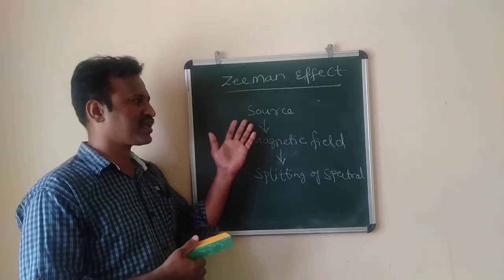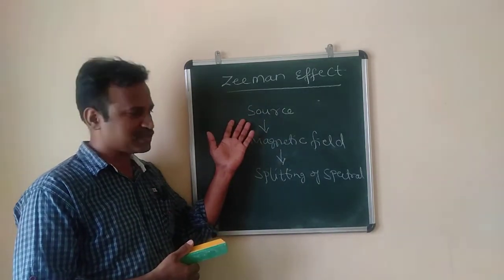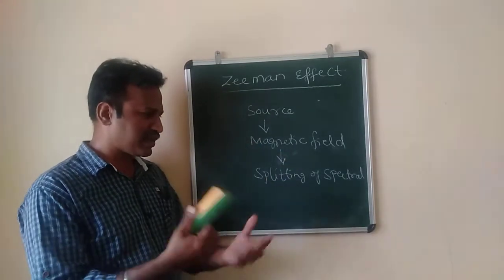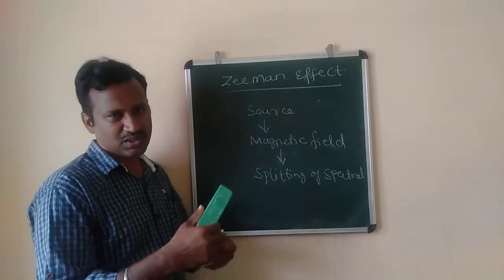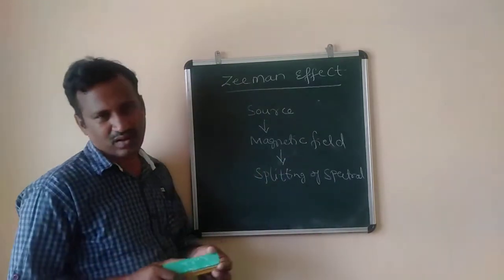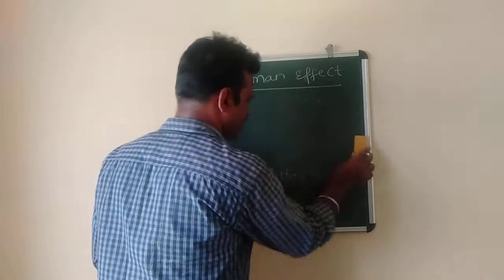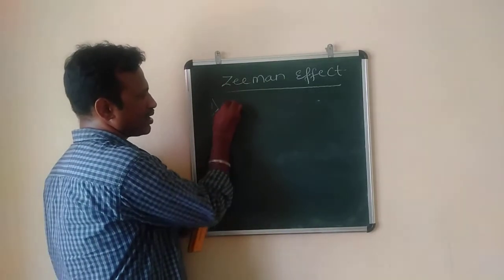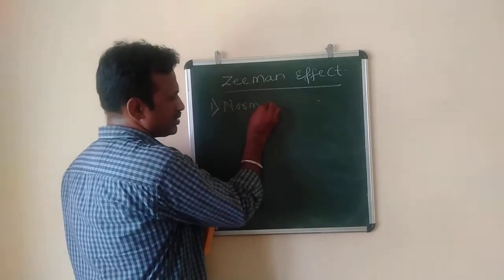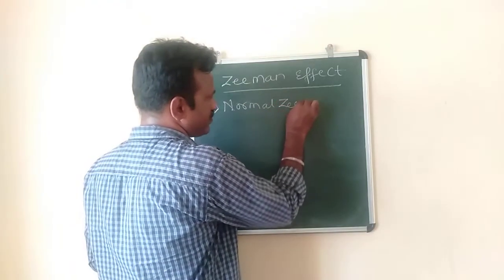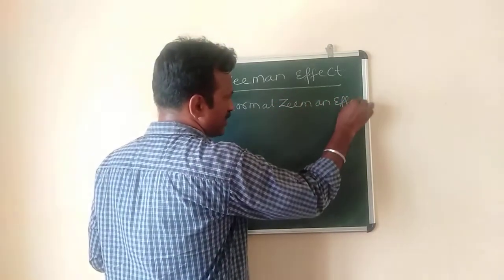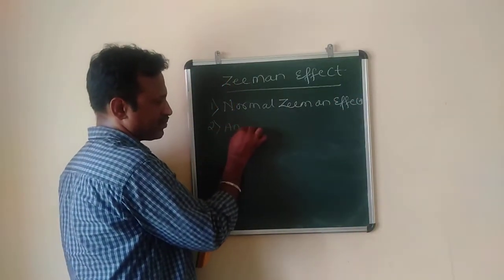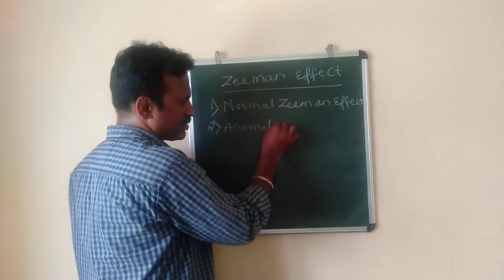What we mean by Zeeman effect is: whenever we have any source which is producing a spectrum, when it is placed in a magnetic field, if there is a splitting up of the spectral lines into two or more components, that is what we call the Zeeman effect. This Zeeman effect is divided into two types.